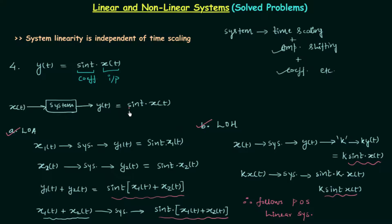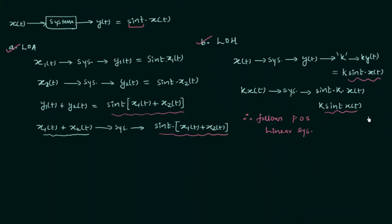So you can see, when we multiply a coefficient which is a function of time, the system is linear in nature. Now we will find out what happens if we multiply a coefficient which is constant — not a function of time. For this we will solve the fifth problem: y(t) = e^3 · x(t). We will first find out the functionality of the system, and then check the law of additivity and homogeneity.